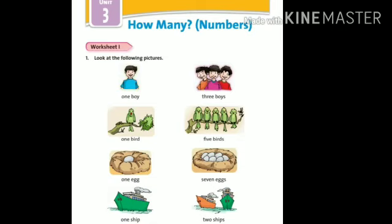One boy, three boys. One bird, five birds. One egg, seven eggs. One ship, two ships. Now moving further on page number 18.